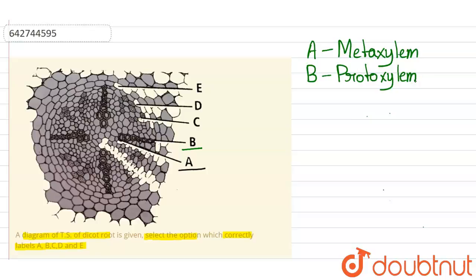So the bundles of xylem are exarch, that is where the metaxylem is present towards the center and the protoxylem is present at the outer side. So this is an exarch bundle.